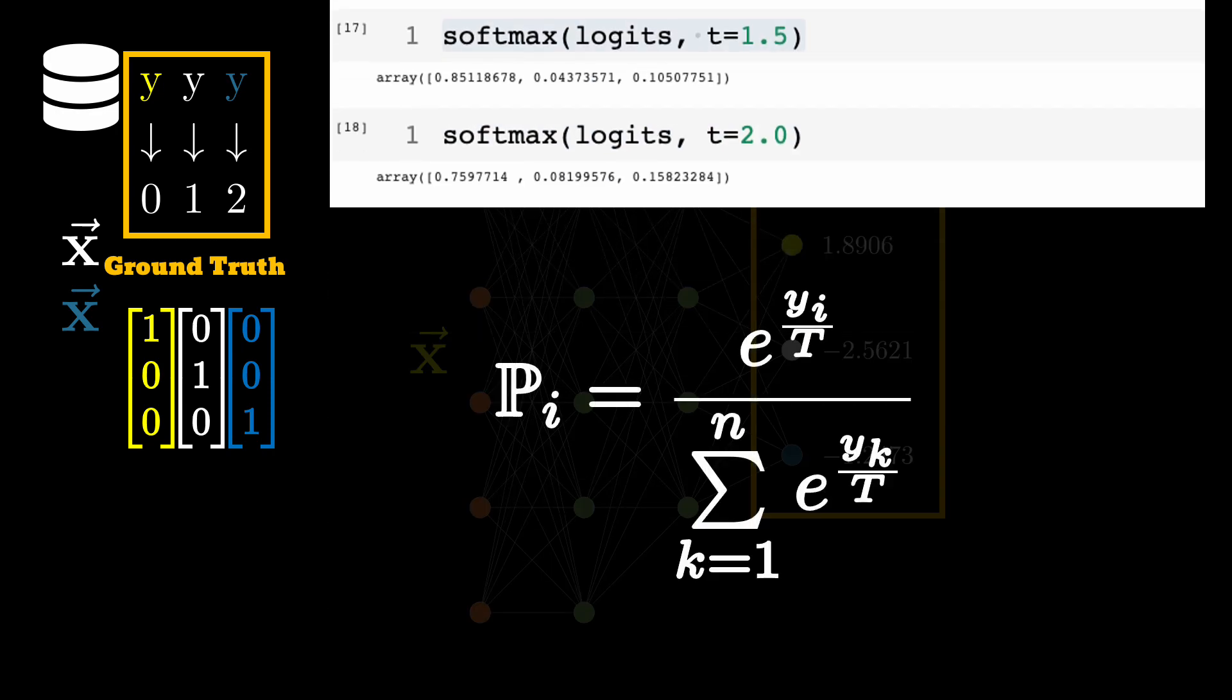And finally, we can represent it mathematically like this. This is a softmax operation for every entry in the logits vector. Here, I have put T to indicate temperature. If the T, the value of T is equal to one, you have a regular softmax. Otherwise, it is the one with some temperature.